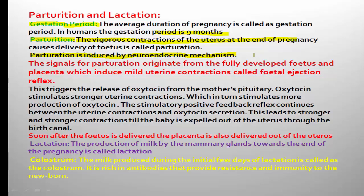The vigorous contraction of the myometrium is induced by oxytocin. Now, one more very important concept related to parturition: the signals for parturition originate from the fully developed fetus and the placenta, which induce mild uterine contractions called the fetal ejection reflex.